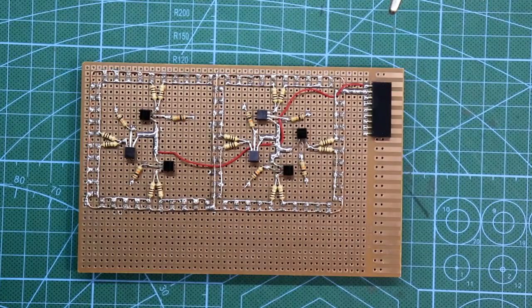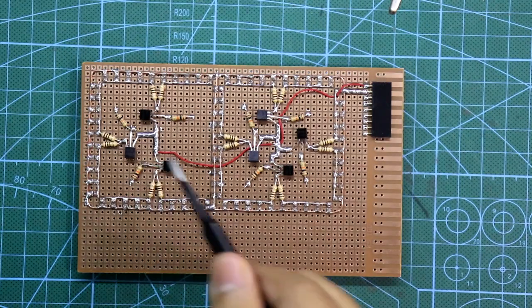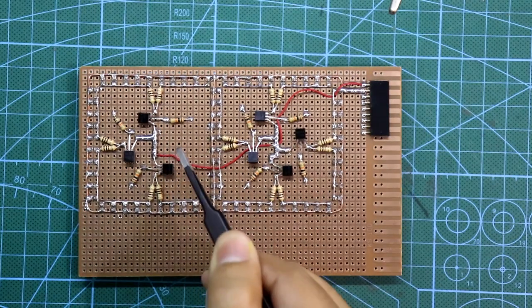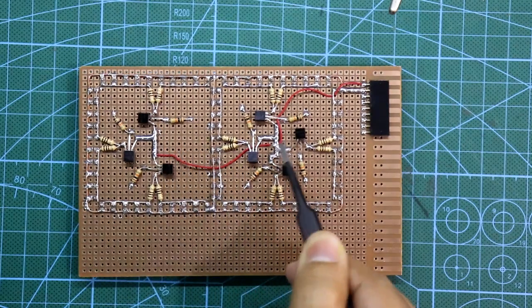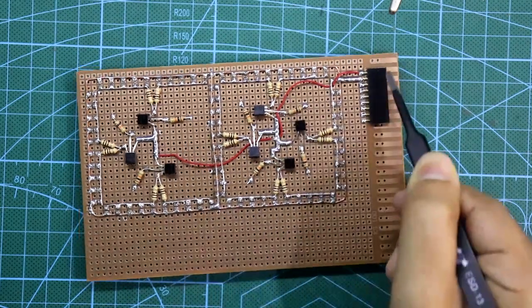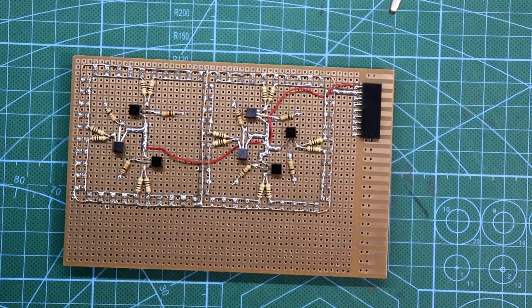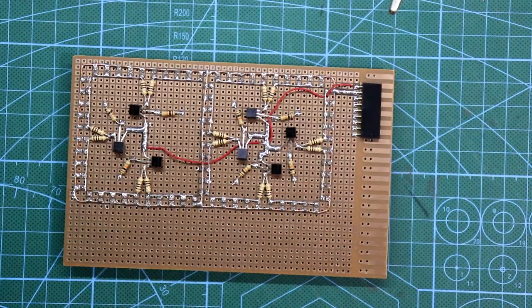And this is how I have connected all the positives. Means all the collectors of the transistor. These three are connected. And then it is connected to here. And then all this goes to pin number 1. That is all the positives are connected. And here we have to supply plus 5 volt.